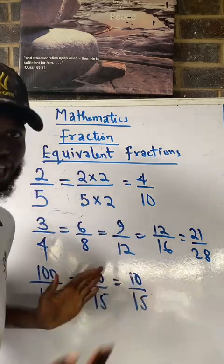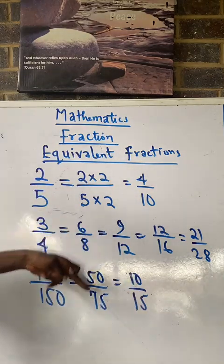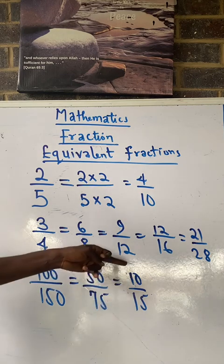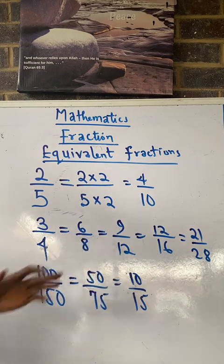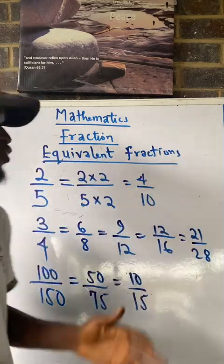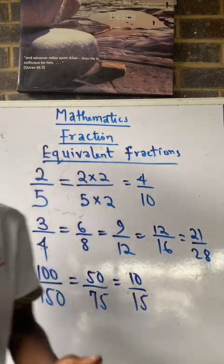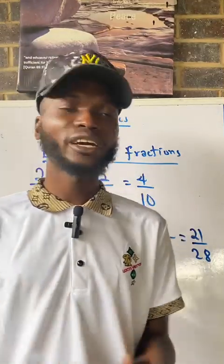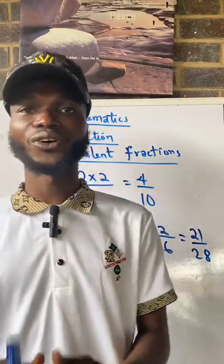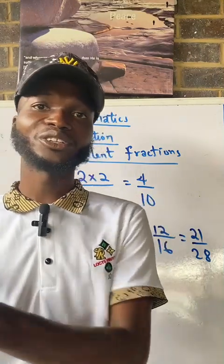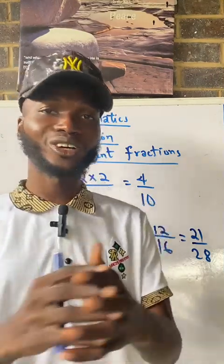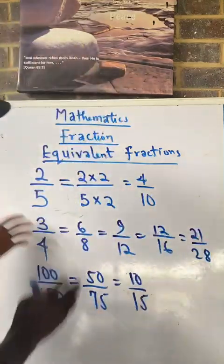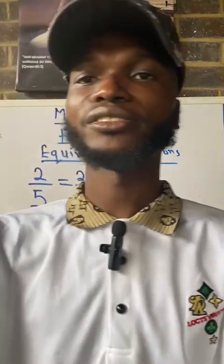So fifty over seventy-five is still equivalent to one hundred over one hundred and fifty, and ten over fifteen is still equivalent to both. This concept is what we always apply when reducing fractions to the lowest terms. This will help junior school, elementary, and primary school students. Thank you very much for viewing this.